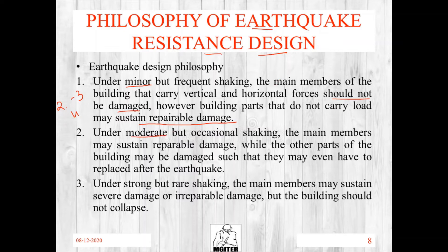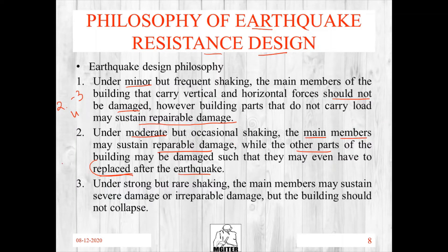For a moderate earthquake — magnitude 5 to 6.9 — the main structural members will sustain repairable damage and can be repaired after the earthquake. Other parts such as walls or non-structural elements can be replaced. So at moderate earthquake level, main members sustain repairable damage and some portions will need replacement.